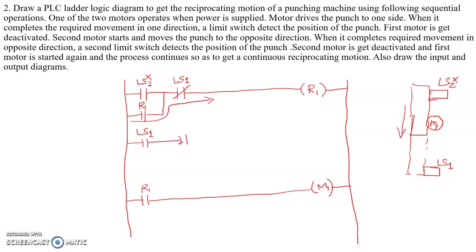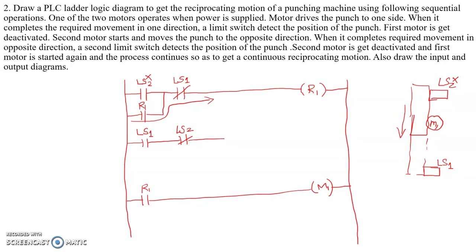That LS1 contact is connected in series with a normally closed contact of LS2 for the R2 rung. Note that both LS1 and LS2 have a normally open switch contact and a normally closed switch contact. Here the normally closed switch is LS2, and similarly LS1 has a normally open contact and a normally closed contact.